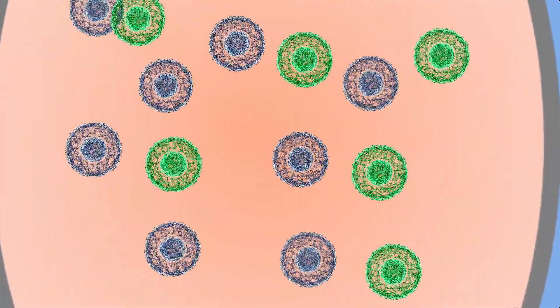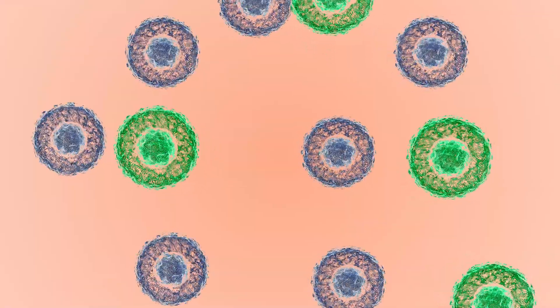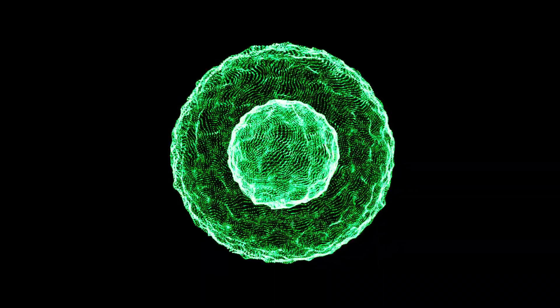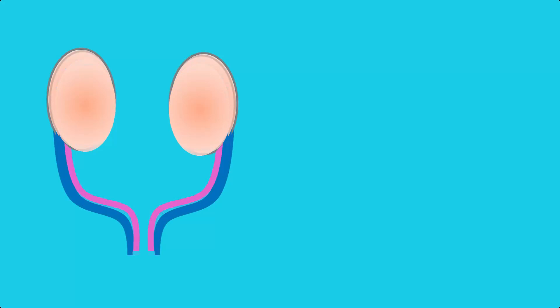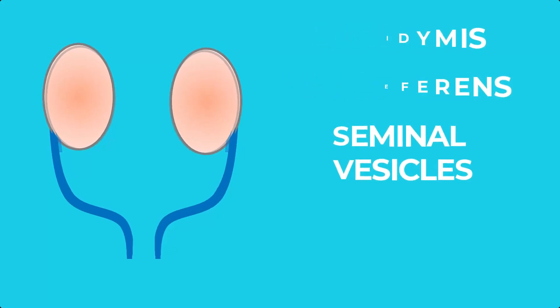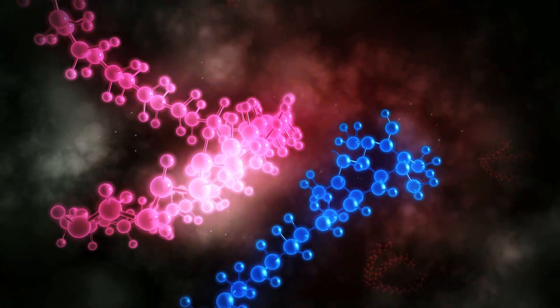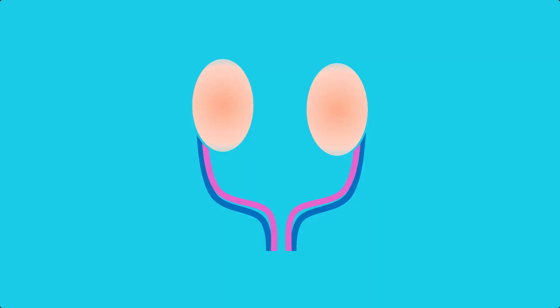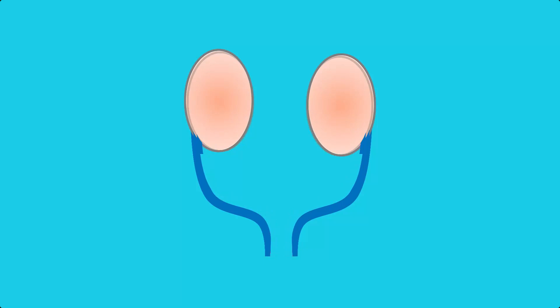The testes then begin to mature and create different cell types that will play a key role in sexual differentiation. The developing testes contain two types of cells: the Leydig cells and Sertoli cells. Leydig cells release testosterone, and Sertoli cells release anti-Mullerian hormone, or AMH. Testosterone triggers the development of the Wolffian duct into the male reproductive organs, including the epididymis, the vas deferens, and the seminal vesicles. While testosterone stimulates the growth and development of reproductive organs, AMH acts to inhibit the formation of the Mullerian ducts, which would mature into fallopian tubes, the uterus, and the upper regions of the vagina.